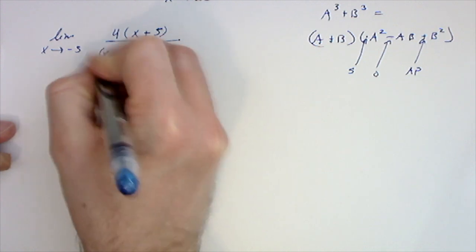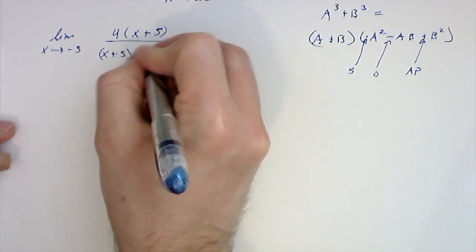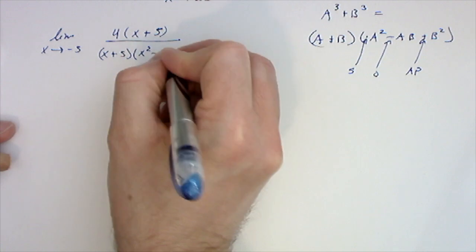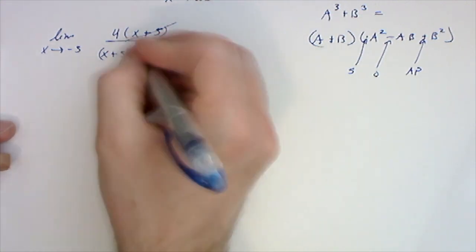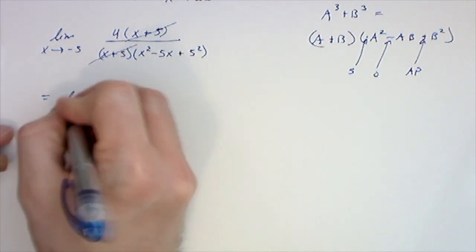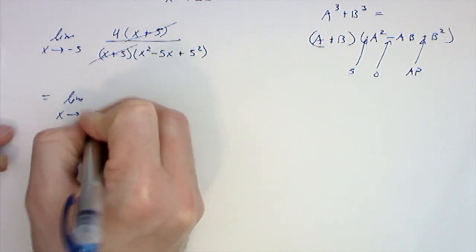x cubed plus 5 cubed is going to factor as x plus 5 times x squared minus 5x plus 5 squared. These can cancel. We're left with the limit as x approaches negative 5 of 4 over x squared minus 5x plus 25.